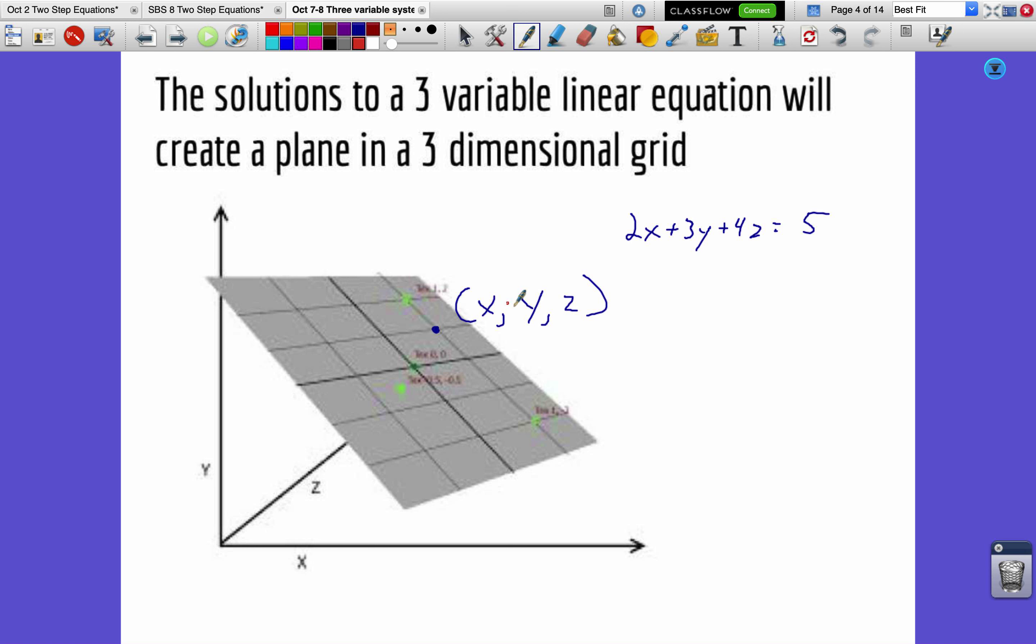Notice here when we write ordered pairs with a third variable, we still use commas to separate them, put them inside a set of parentheses, and we just put a third number in there and call it z. It still goes alphabetically. Yep, and that's pretty much it. Get a sketch of something like this into your notes as well.